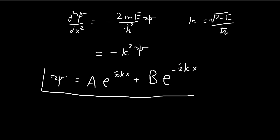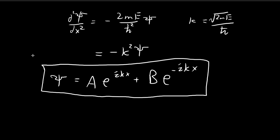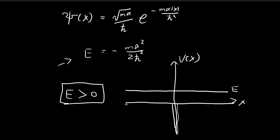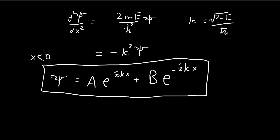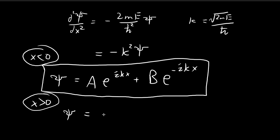This is similar to the free particle case. We break psi(x) into two parts: the region where x is smaller than 0 and the region where x is larger than 0. For x smaller than 0, psi(x) takes this form with constants A and B. For x larger than 0, psi(x) is equal to F times e to the power of positive ikx plus G times e to the power of negative ikx.